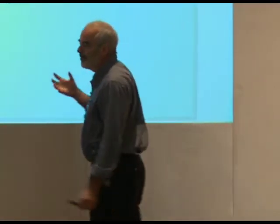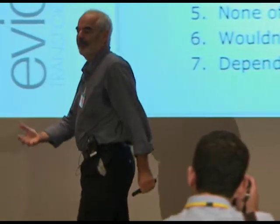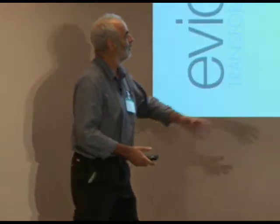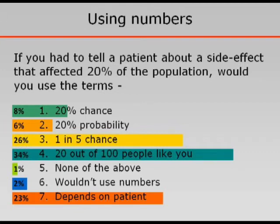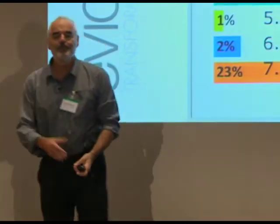Let's say you wanted to tell somebody that the drug they were going to take had a 20% chance of a side effect — it affected 20% of the population, or a one in five chance. What would you tend to use? 20% chance, 20% probability, one in five chance, 20 out of 100 people like you, none of the above, or wouldn't use numbers at all? Probability is not very popular — good. 20% chance again is not recommended. The most popular recommendation is '20 out of 100,' which is very common. And 'depends on the patient' — again, a very reputable response.